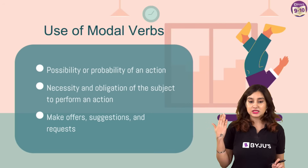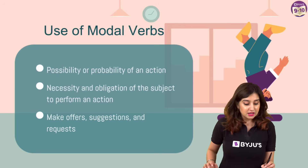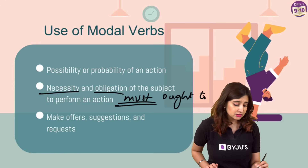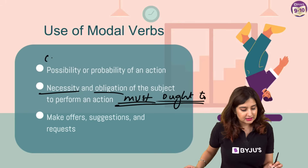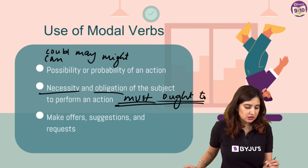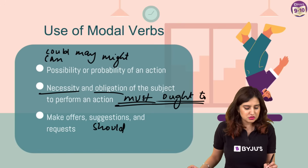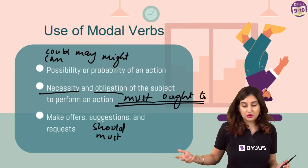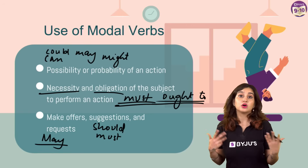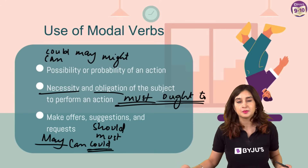Use of modal verbs: for possibility or probability of an action, we use can, could, may, or might. Necessity and obligation uses must or ought to. For suggestions, we usually use should; we can also use must. For requests, we generally use may - 'May I do this?' - or sometimes can or could. If you wish to be more polite, you use could. Depending upon the sentence, you'll be able to tell which modal is being used as what.